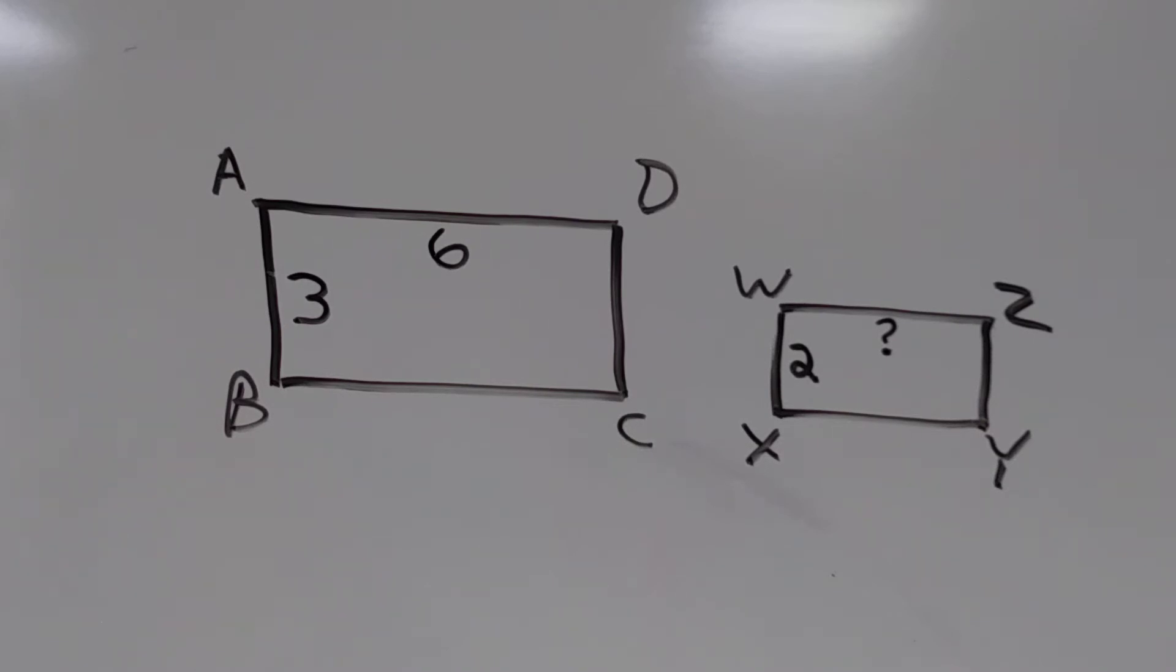On the smaller rectangle, we can see that the corresponding side to AB, WX, is only two units wide, but we don't know the long edge. How do we find it?